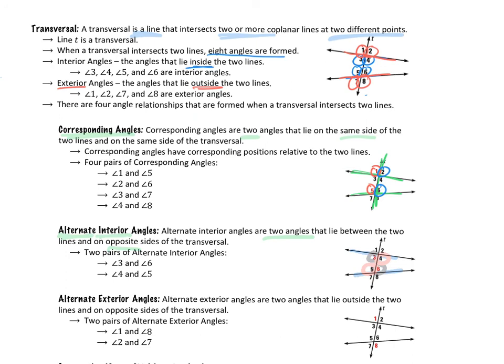Using similar logic, alternate exterior angles are on opposite sides of the transversal but outside the two original lines. There are only two pairs: angle 1 and angle 8 are both outside the two lines on opposite sides of the transversal, and angle 2 and angle 7 form the other pair.